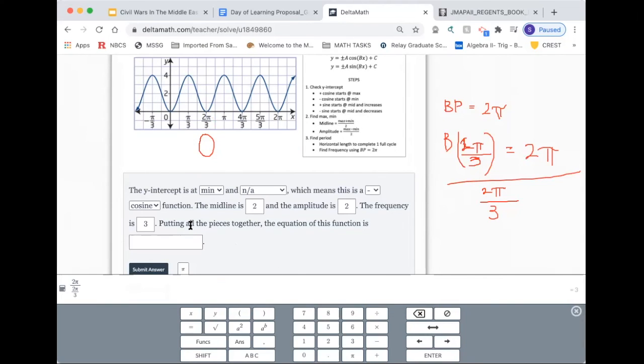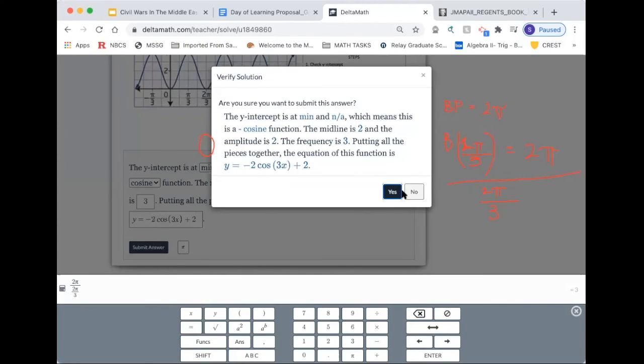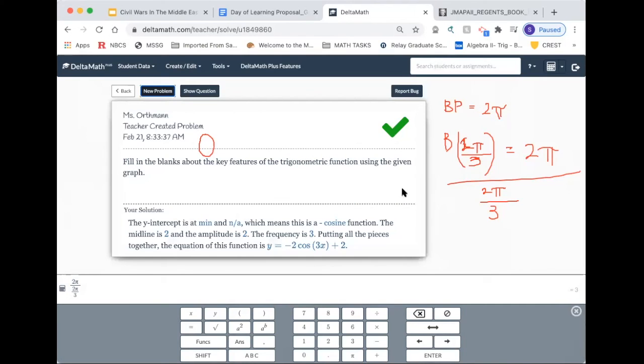Alright, so then now it's time to put all the pieces together. So the equation of the function, we're going to start with y equals. Let's go back to the beginning. We have to decide positive or negative, cosine or sine. And we did say it's going to be a negative cosine. Now the b is 3. And then, hold on, amplitude has to do with a. So amplitude is 2. But remember, it's going to go between the negative sign and the cosine. That's what's tricky about amplitude. Amplitude is not the a value. Amplitude is the absolute value of the a value. I'm going to put the x, close parentheses, and then my midline, which is 2. So here we go. Done. Go ahead and try the next problem by yourself using the steps as guidance and also your note packet.